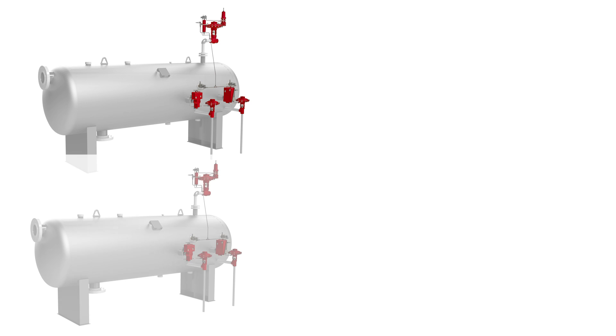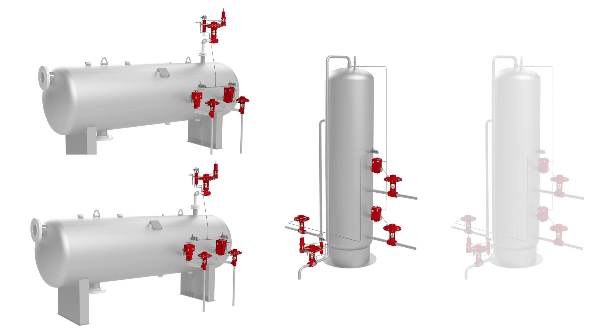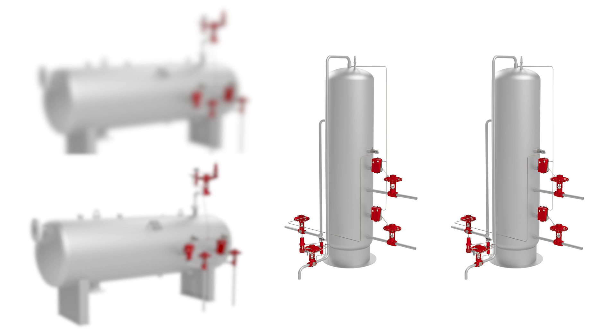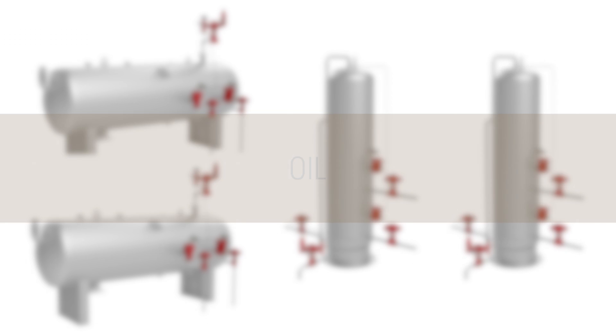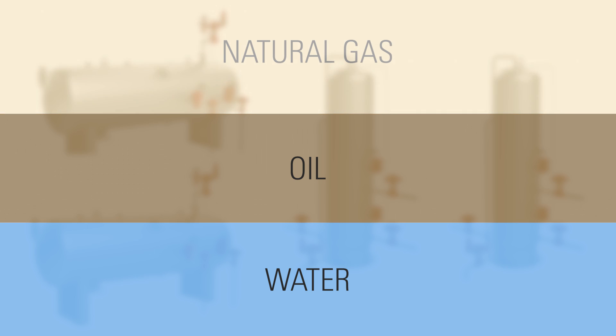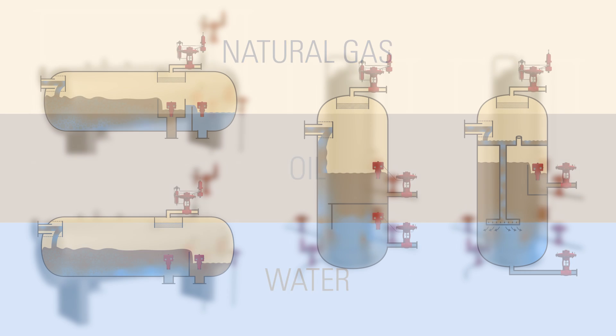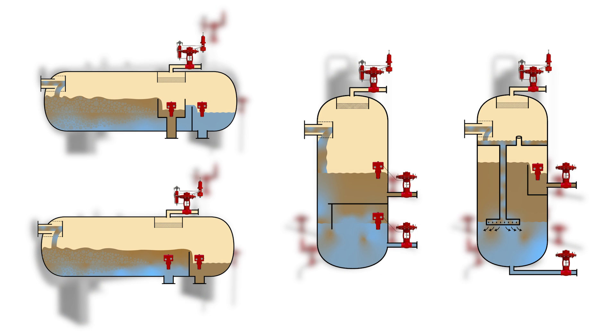Horizontal and vertical three-phase separators split emulsion into three individual components: oil, water, and natural gas. In this video, we'll review four configurations for three-phase separators.